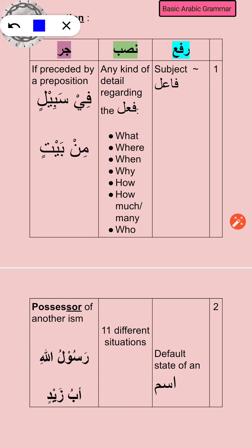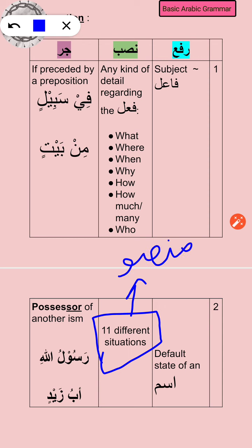There are 11 different situations in Arabic when an ism assumes the nasb form. This entire subject is called mansubat, and inshallah we are going to study all of these — some at length and some briefly — so you can identify why an ism is in nasb form rather than rafa.